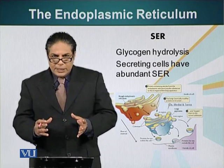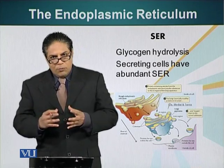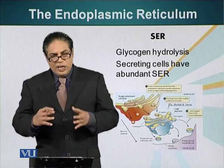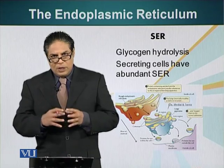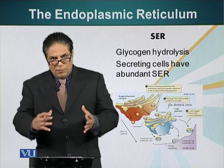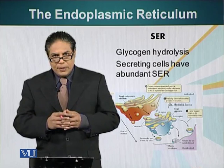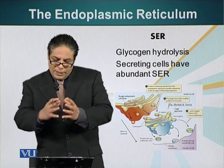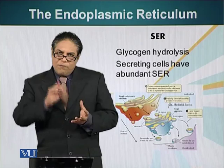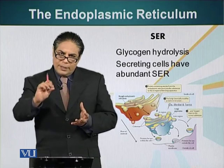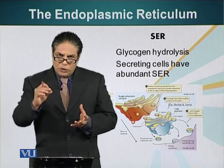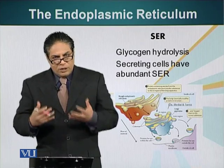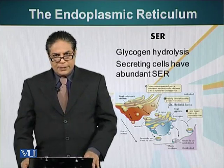The packages released from the endoplasmic reticulum are released from the smooth endoplasmic reticulum portion. Smooth endoplasmic reticulum is the site where these vesicles are formed. They will fuse with the Golgi apparatus, which we will talk about next. In the Golgi apparatus, further protein modifications take place.